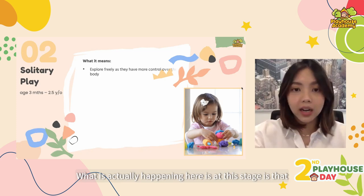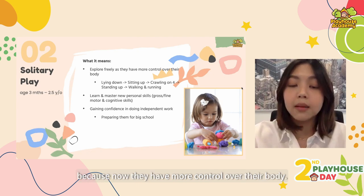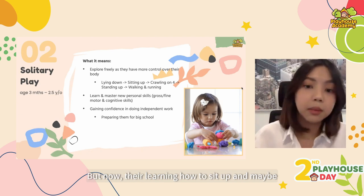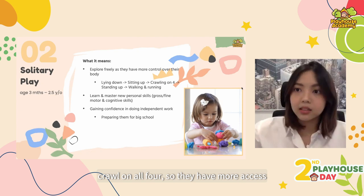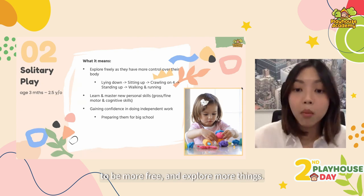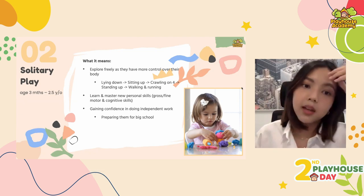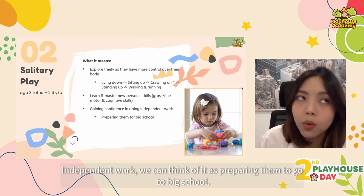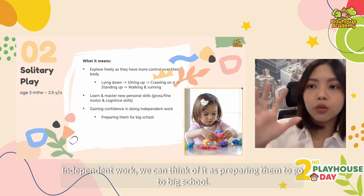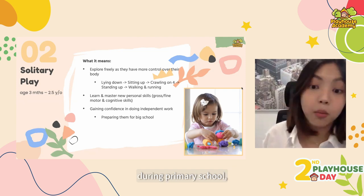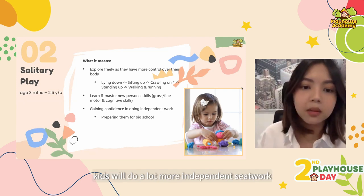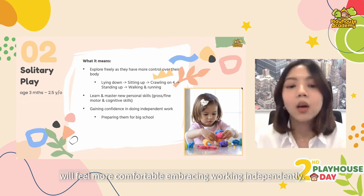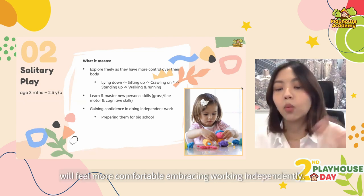What's actually happening at this stage is that children are exploring more freely because now they have more control over their body. In the previous stage maybe they could only lie down, but now they're learning how to sit up and maybe crawl on all fours. So they have more access to explore more things. They're learning and mastering new personal skills and gaining confidence in doing independent work. We can think of independent work as preparing them for big school — during primary school, kids do a lot more independent seat work on their own. Children who have learned to be comfortable doing solitary play will feel more comfortable embracing working independently too.